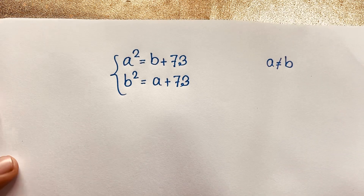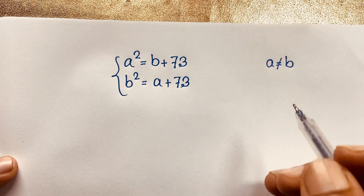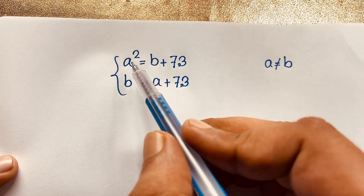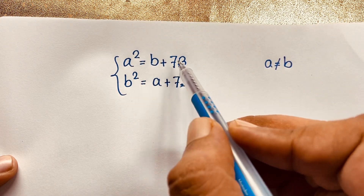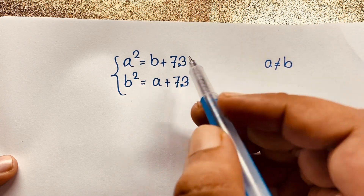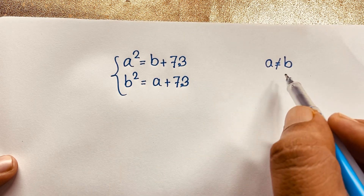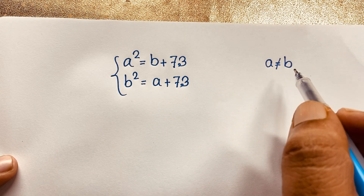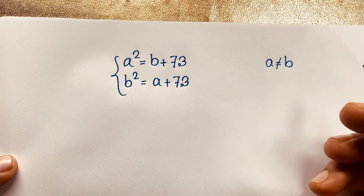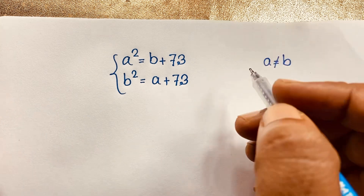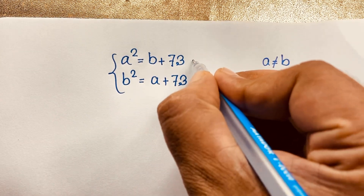Hello everyone, welcome to Rasha's classroom. Today we'll solve an interesting algebraic problem: a squared equals b plus 73, b squared equals a plus 73, where a is not equal to b. We'll find out the values of a and b in this algebra problem — a Math Olympiad question.